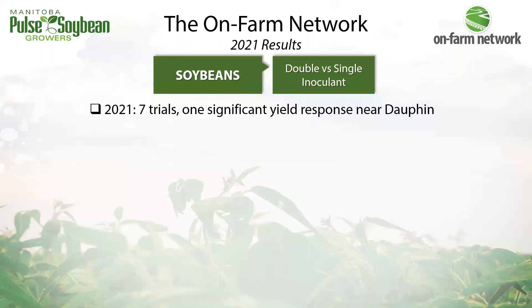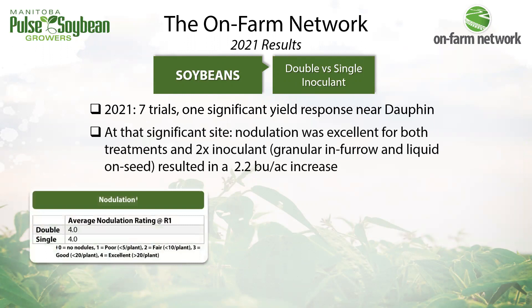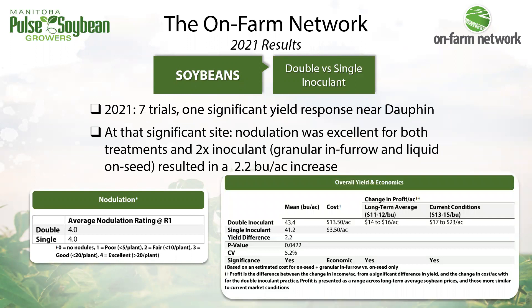For soybean inoculants, we had seven double versus single inoculant trials this year, with one significant yield response near Dauphin. Double inoculant is typically an on-seed inoculant plus something in-furrow; a single inoculant is seed-applied alone. At that significant site, there was no difference in nodulation between treatments — both had excellent nodulation. Yield was increased by just over two bushels per acre, enough to cover the cost of the granular inoculant and provide a profit. Our economics tables this year have two columns capturing soybean cell prices of $11–$12 and $13–$15 per bushel to reflect price changes.